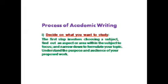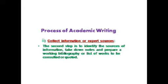Understand the purpose and audience of your proposed work — you should know who is going to read your writing. The second step is to collect information or explore sources. It is not enough that we give our opinions; we also need to support our arguments with external sources. Identify the sources of information, take down notes, and prepare a working bibliography or list of works to be consulted or quoted. Whenever you take others' opinions you need to cite them.